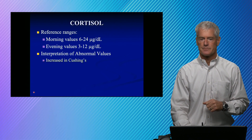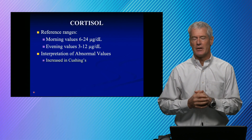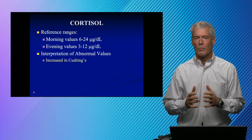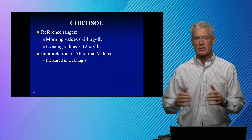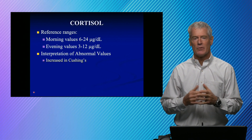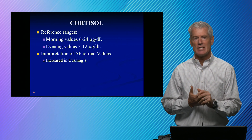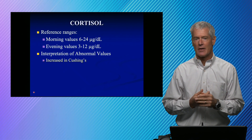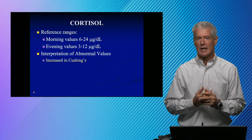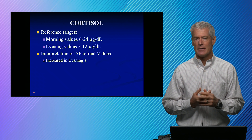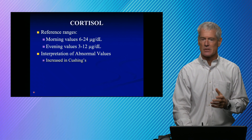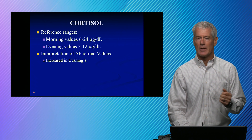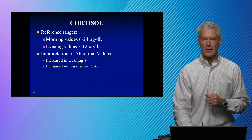Cushing's is defined as any increase of cortisol. We break that down into Cushing's syndrome and Cushing's disease. Cushing's syndrome is any excess of cortisol. Cushing's disease is a specific lesion at the pituitary — an ACTH-secreting pituitary adenoma. We're going to talk about how to differentiate Cushing's disease from some of the other causes of excess cortisol.